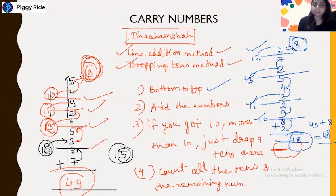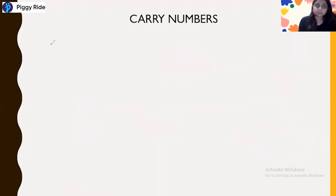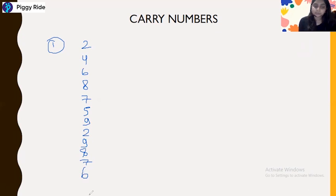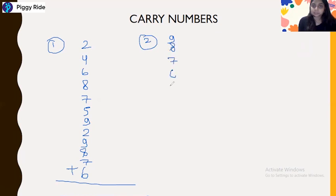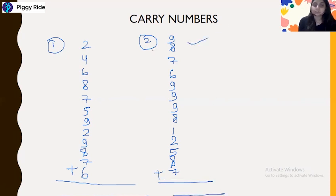So let me give you some homework. Question one: 2, 4, 6, 8, 7, 5, 9, 2, 9, 8, 7, 6. Please do not use rough copy, pen, or paper. Question two: 9, 8, 7, 6, 9, 9, 9, 8, 1, 2, 5, 8, 7. Just solve these two questions and we will see the other method in our next class. Thank you for joining the session — hope you are enjoying this mathematics. We will meet in the next class.